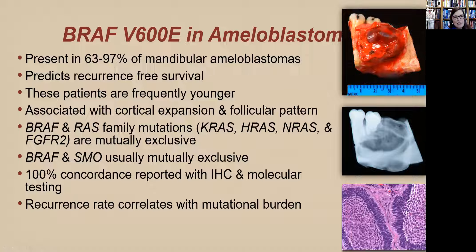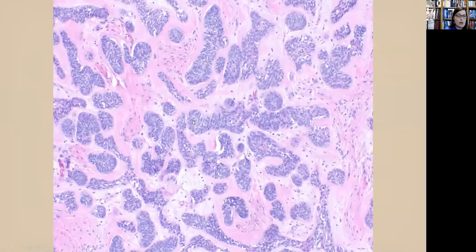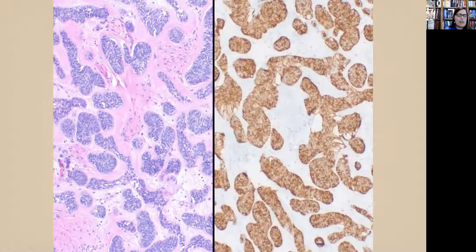The follicular pattern makes sense because it is more frequently seen in mandibular ameloblastomas. BRAF and RAS family mutations are mutually exclusive, as are BRAF and smoothened mutations. There is good concordance between IHC and molecular testing. The recurrence rate correlates with mutational burden — patients with two to three mutations are more likely to have a higher rate of recurrence. Here is a patient with a somewhat follicular but hypercellular ameloblastoma where BRAF immunohistochemistry is nicely positive — a mandibular ameloblastoma.